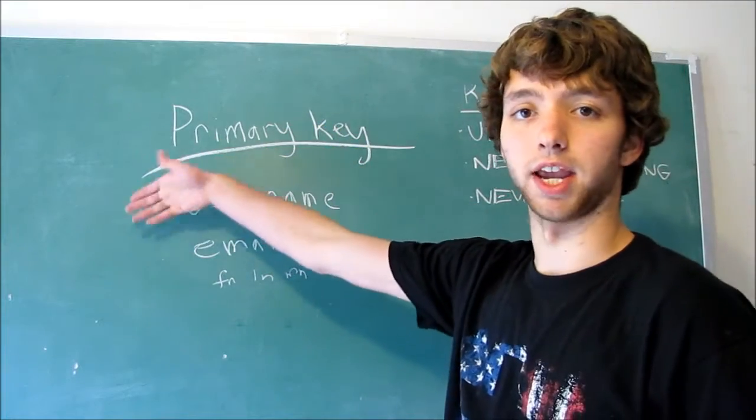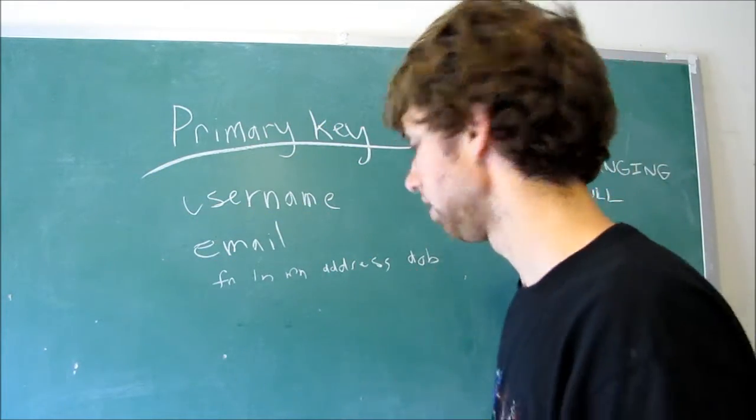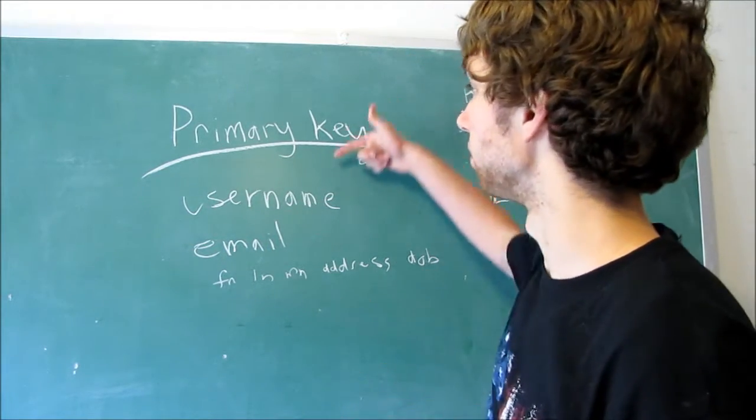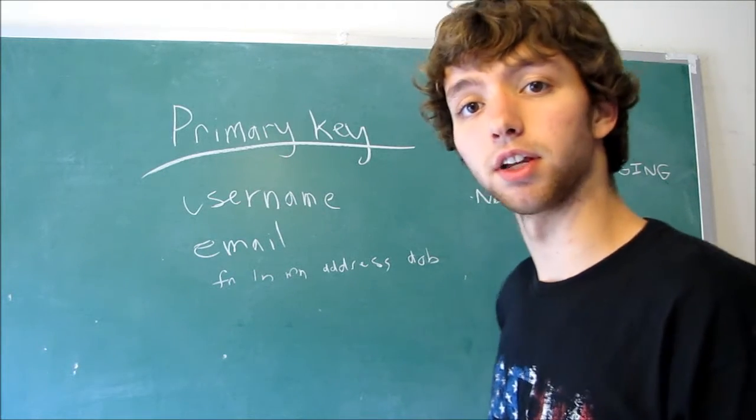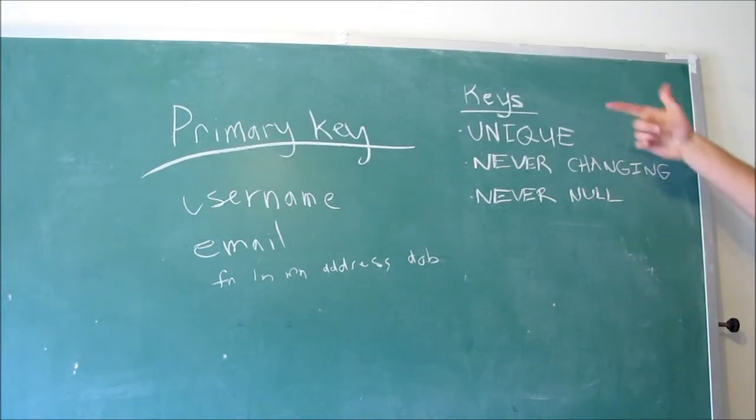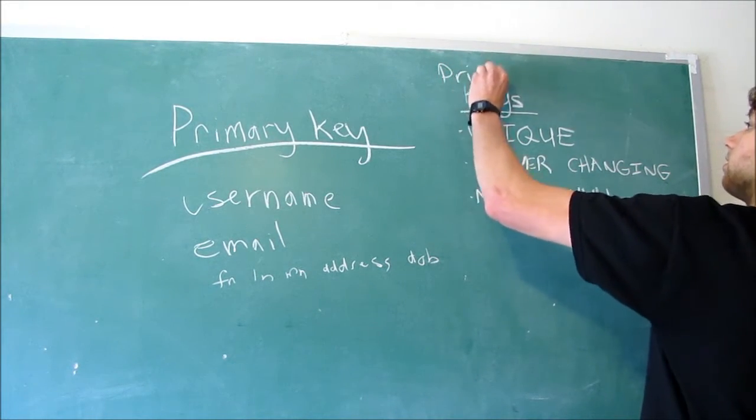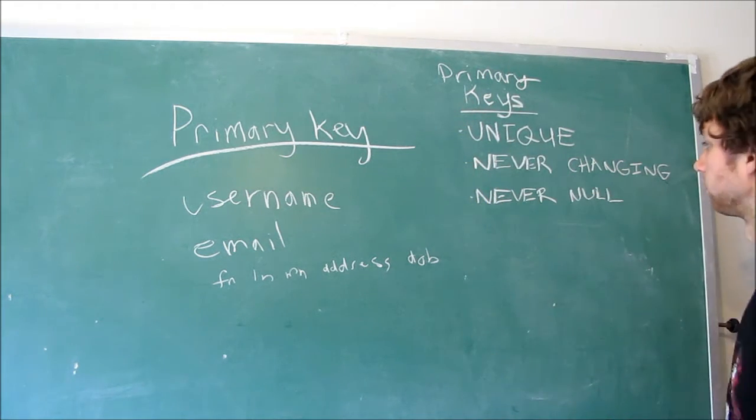So here are just some possibilities for candidate keys. We could have username, email, first name, middle name, blah, blah, blah. Well now, once you have all your possible candidate keys, you want to pick one to be your primary key. So how do you do that? Well, once again, you've got to make sure we look at the rules or suggestions for keys. This is specifically talking about primary keys. We want our primary key to be unique, never changing, and never null.